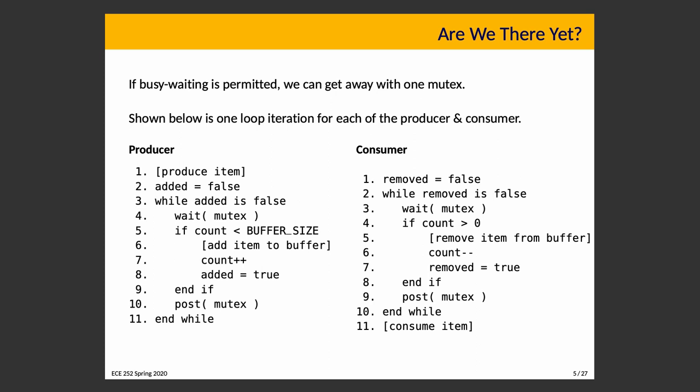The producer produces an item, sets 'added' to false, and while added is false, waits on the mutex to see if it can add the item. If count is less than the maximum size, it adds the item to the buffer, increments count, sets added to true, posts on mutex, and exits the loop. For the consumer, 'removed' is set to false, and while removed is false, it waits on the mutex; if count is greater than zero, it takes an item, decrements count, sets removed to true, posts on mutex, exits the loop, and consumes the item.